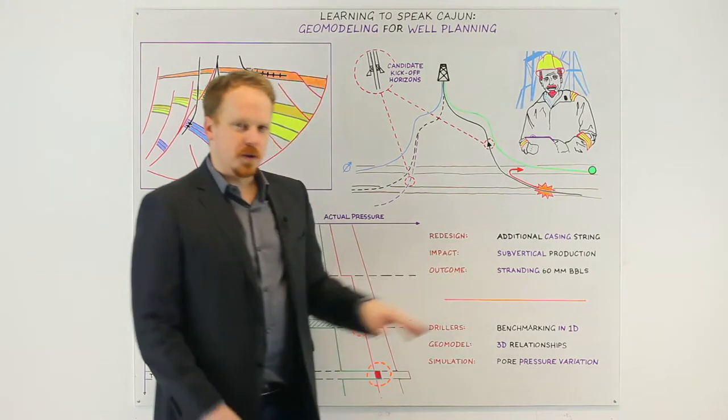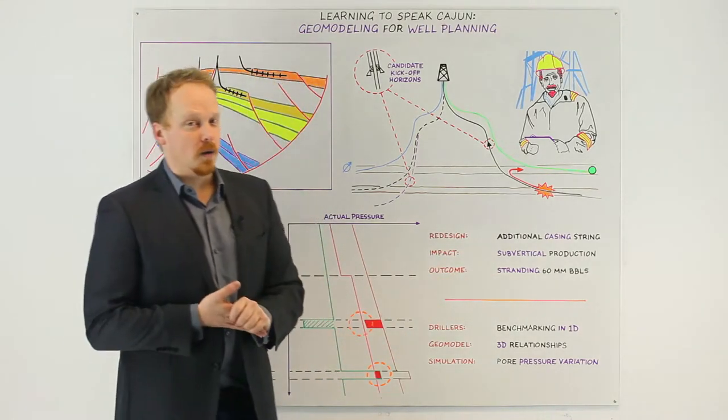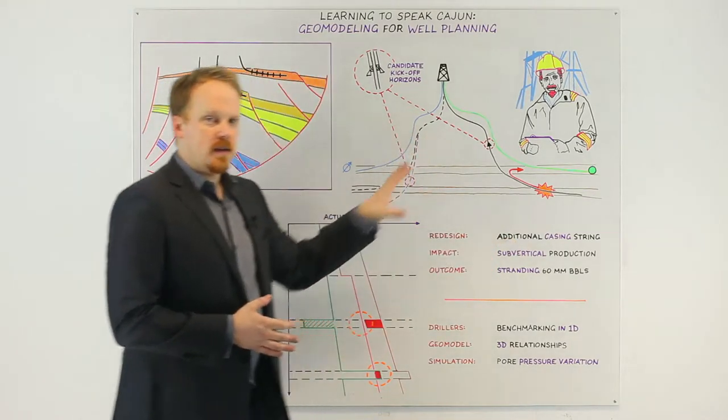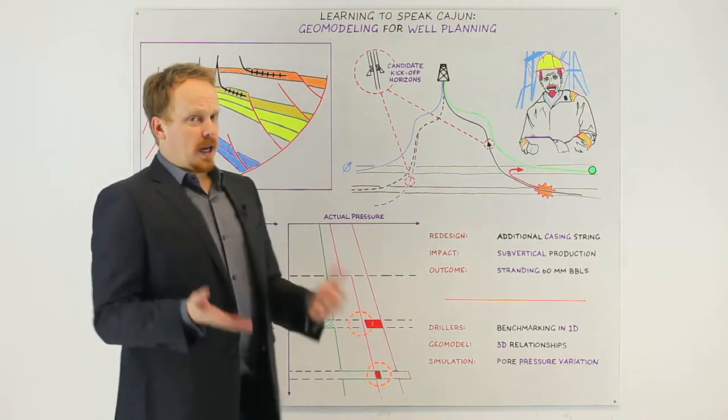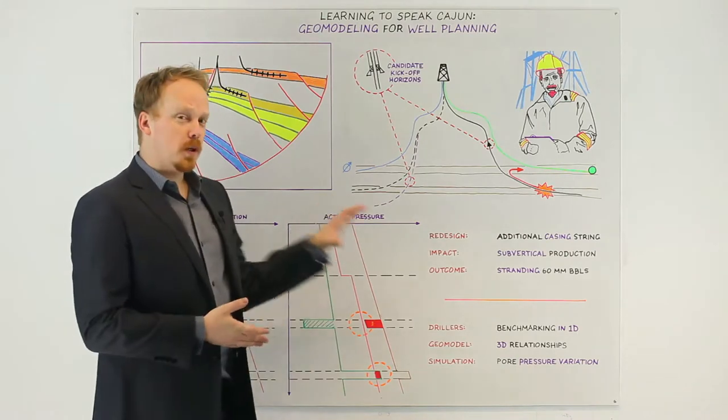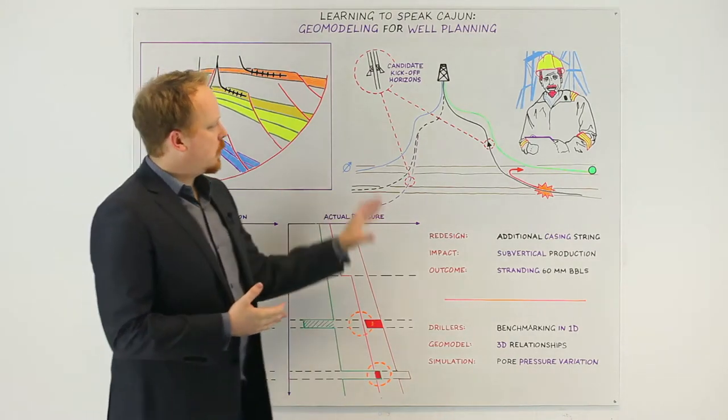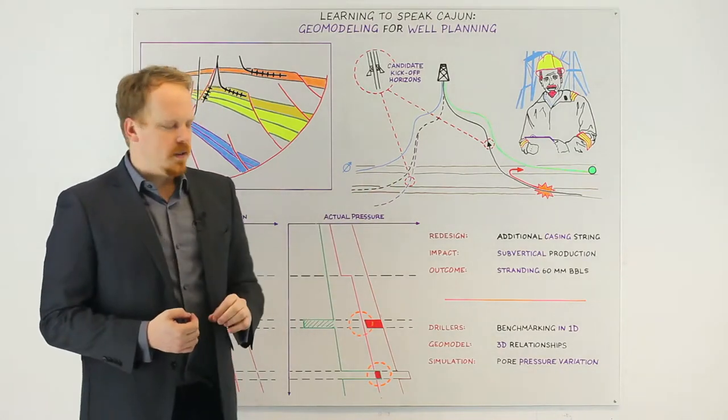That sub-vertical production would have resulted in around about 60 million barrels of lost reserves so we really needed to make sure that that had to happen. This was a field in late production life so it was probably the last campaign that would ever exploit that particular reservoir and we really wanted to make sure this is what had to be done.